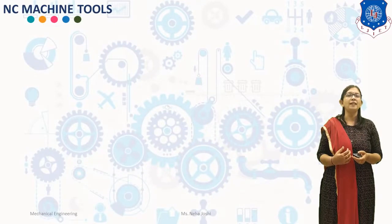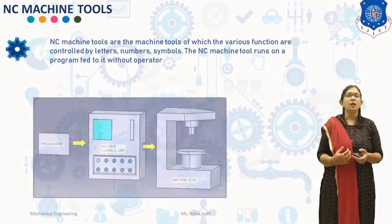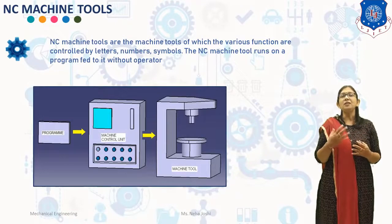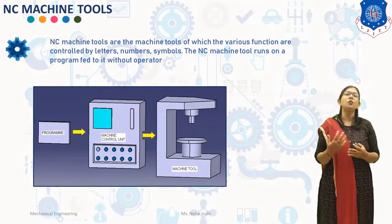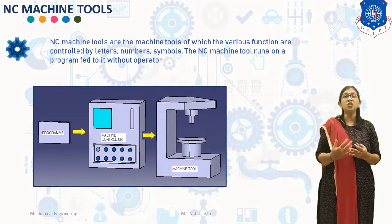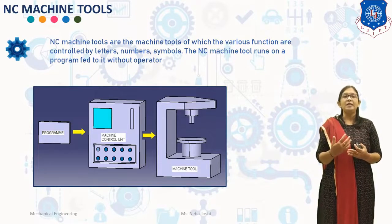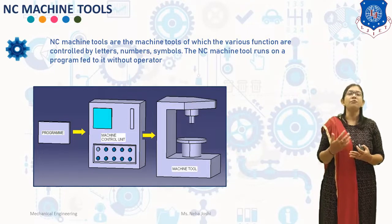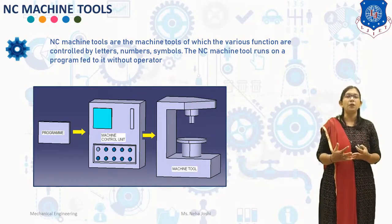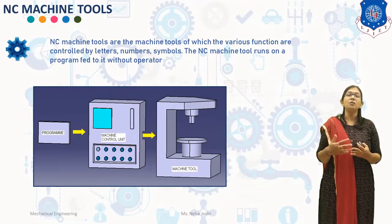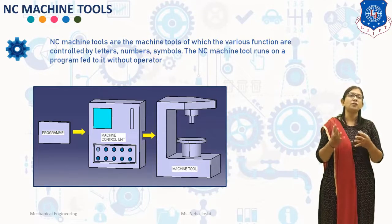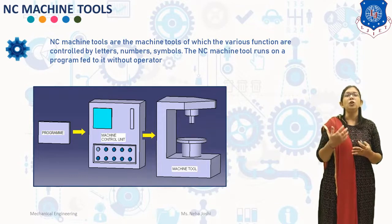Now first of all, what is NC/CNC machine tool? NC/CNC is also known as Numerical Control Machine Tools — machine tools of which the various functions are controlled by letters, numbers and symbols. The NC/CNC machine tool runs on the program fed to it without human operators. The NC/CNC program consists of a set of instructions or statements for controlling the motion of the drive of the machine tool as well as the motion of the cutting tool.